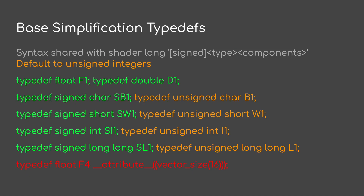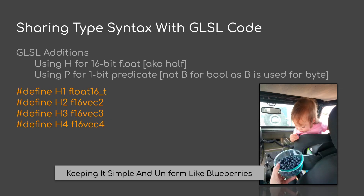Let's continue with some base simplification typedefs — this time for types. These have the syntax: an optional capital S for signed, followed by a single capital letter for a type, followed by the number of components. Number of components is so it has portability with GLSL. Let's default to unsigned integers, so I don't use a U as default — it's just not there. We'll only use S when we actually want explicit signed types. F for float, D for double, B for byte, W for word (16-bit), I for integer (32-bit), L for long (64-bit). I like to share my syntax with GLSL. I use H for 16-bit float, aka half. And I use P for predicate, not B for bool, as bool is used for byte.